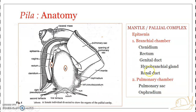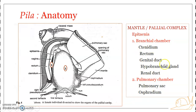To summarize: the mantle cavity is divided into two chambers — the branchial chamber and the pulmonary chamber — by way of the epithenia ridge. All the organs associated with the mantle cavity together form the pallial complex.